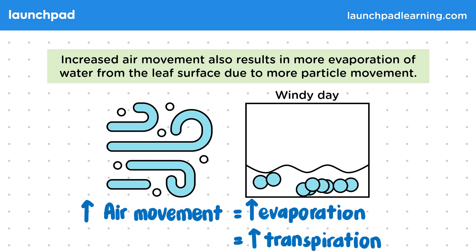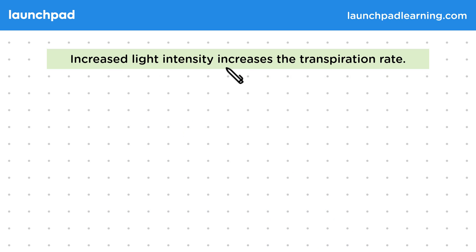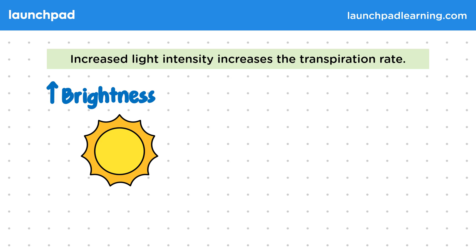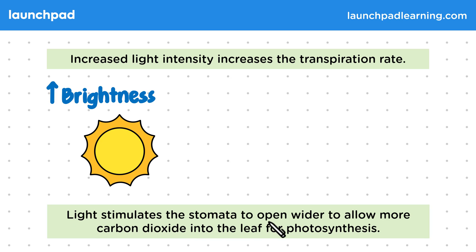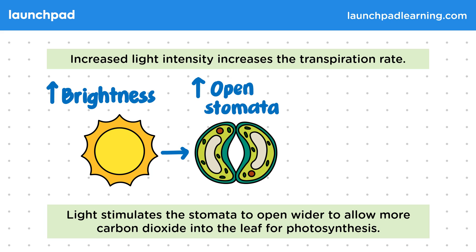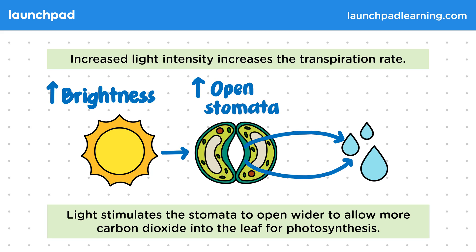How does light intensity affect transpiration rate? Increased light intensity increases the transpiration rate. Remember that increased light intensity means brighter light, such as the light that comes from the sun. Light stimulates the stomata to open wider to allow more carbon dioxide into the leaf for photosynthesis. More open stomata will allow in more carbon dioxide for increased photosynthesis, and the open stomata will allow more water to pass out of the leaf and will therefore increase transpiration.